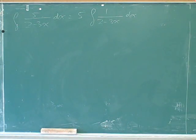Good. And then you know that 1 over something would be an ln. Right. So it would be ln of 2 minus 3x. Okay. Good. Times something else.